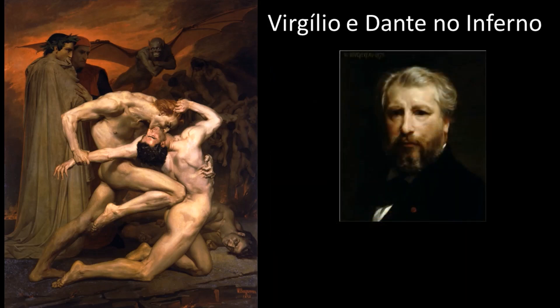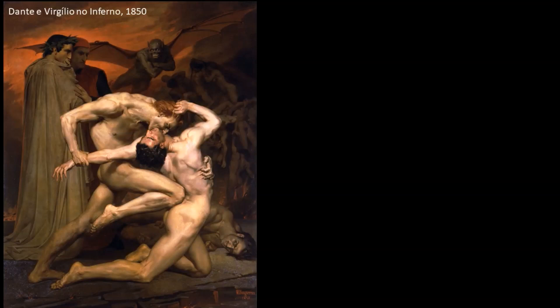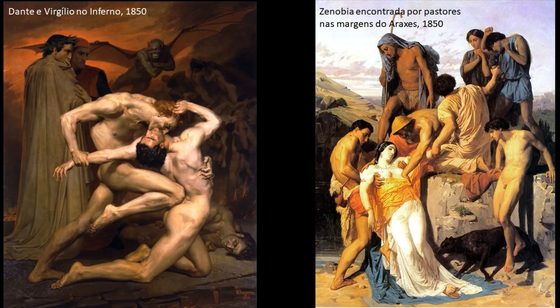Bouguereau queria muito vencer. Chegou a concorrer ao prêmio em 1848. Em 1849, chegou a ser finalista com a obra Igualdade Antes da Morte, mas perdeu. Foi então que em 1850, com apenas 25 anos, ele apostou todas as suas fichas na grande temática clássica de Dante Alighieri. Bouguereau estava faminto por vingança. Além dessa tela, lançou também para concorrer ao prêmio o quadro Zenóbia encontrada por pastores nas margens do Arastes, e assim começava a trilhar seu nome no mundo da arte.